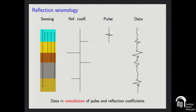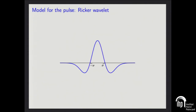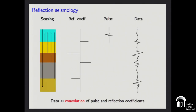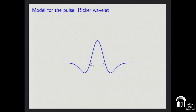In reflection seismology, you basically send a sound wave down — usually using explosives — and then record what comes back up. A reasonably good model for the data obtained is that it's the convolution of the pulse you send down with the reflection coefficients you want to find. A model for the convolution kernel arising from this process, often used for theoretical modeling in geophysics, is the Ricker wavelet, which is basically the second derivative of a Gaussian. We'll assume the convolution kernel is known, even though in practice it might not be.